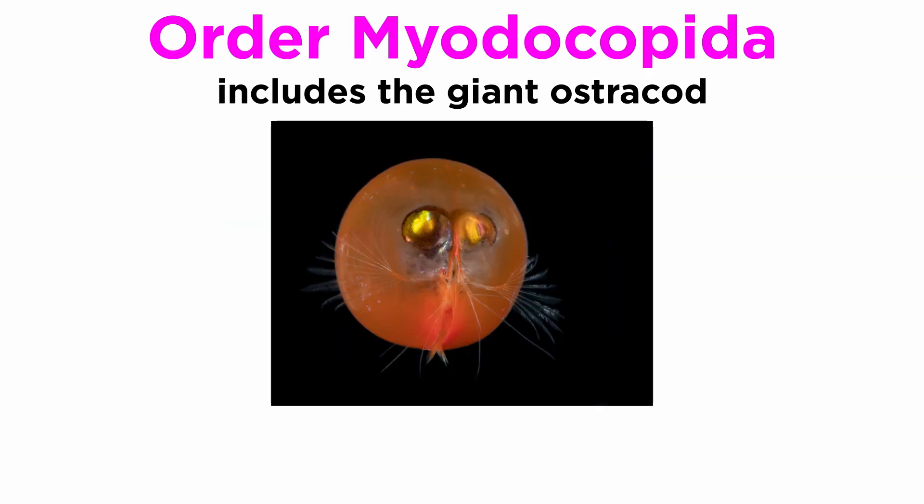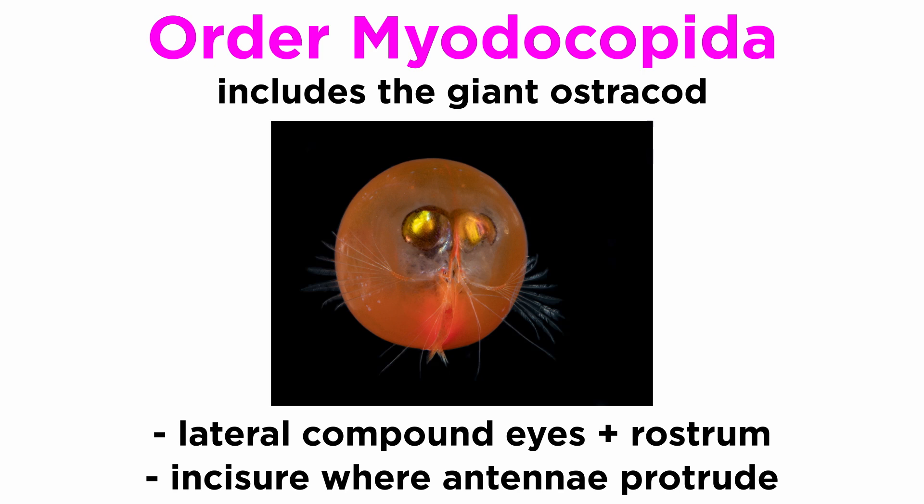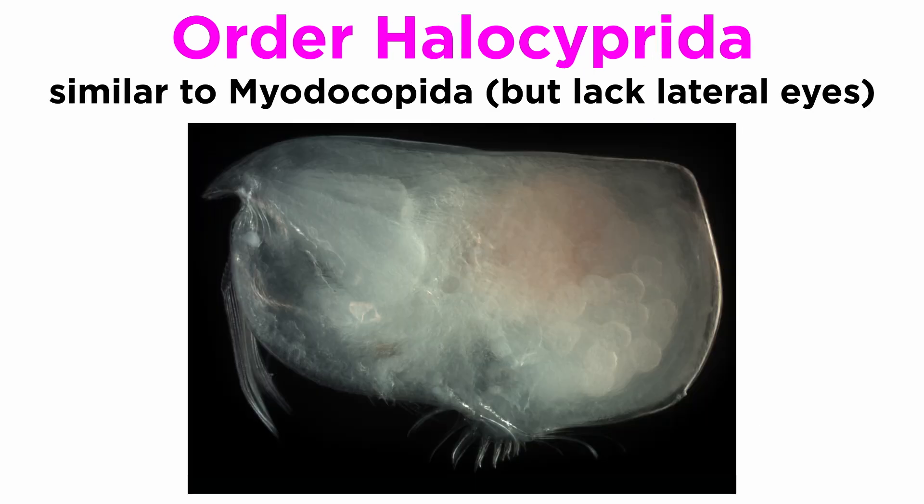Order Myodocopida includes the giant ostracod. Members of this order have lateral compound eyes, as well as a rostrum and incisure from which the antennae protrude. Members of order Halocyprida are similar to Myodocopida, but they lack lateral eyes.